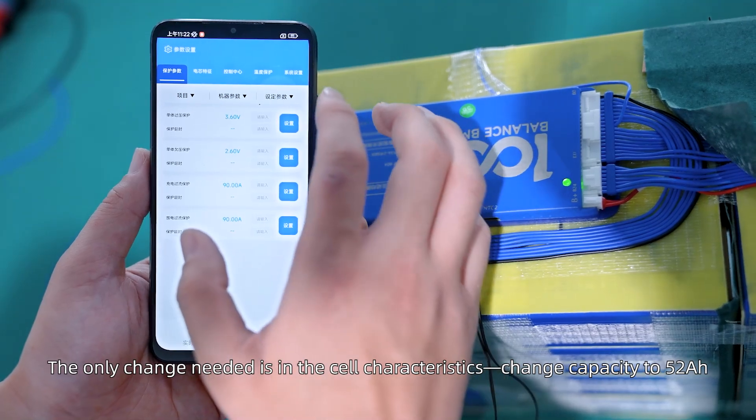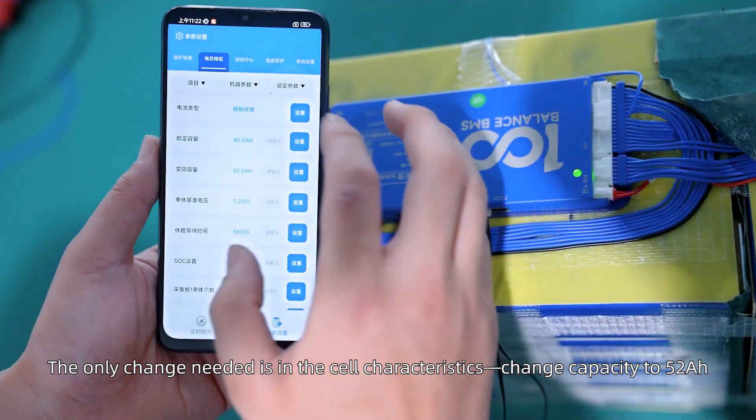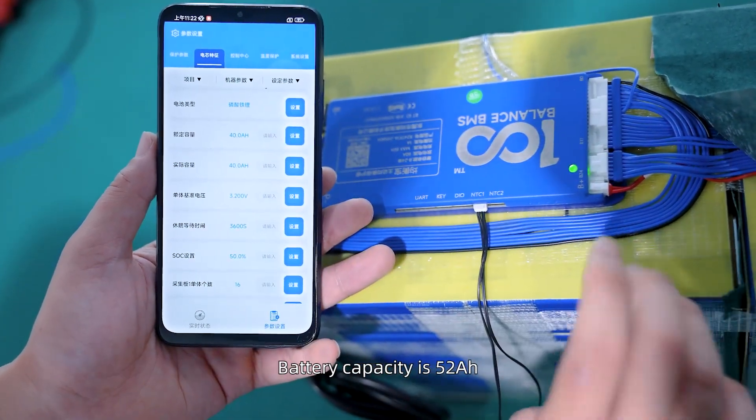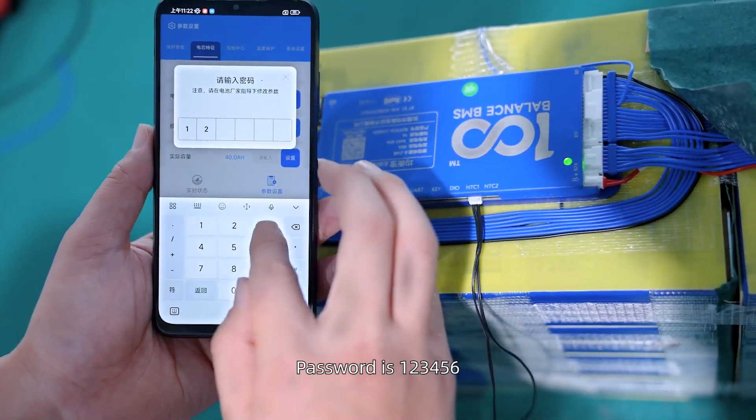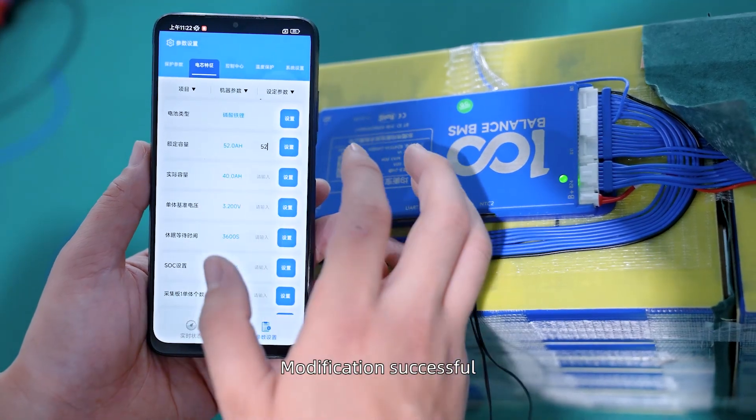The only change needed is in the cell characteristics. Change capacity to 52 amp hours. Battery capacity is 52 amp hours. Change capacity to 52 amp hours. The password is 126, the modification successful.